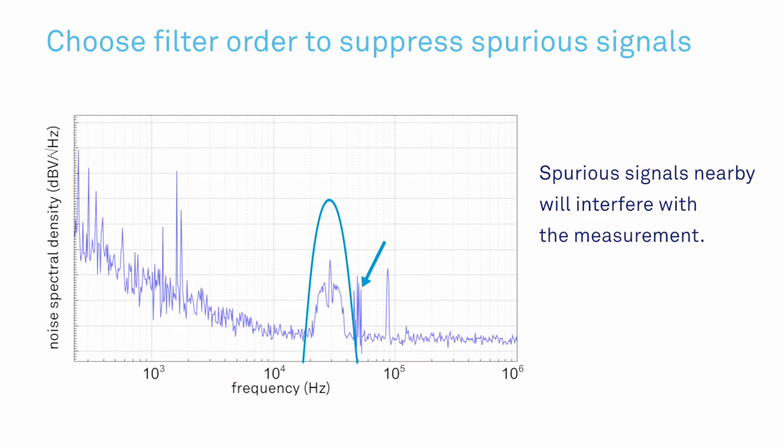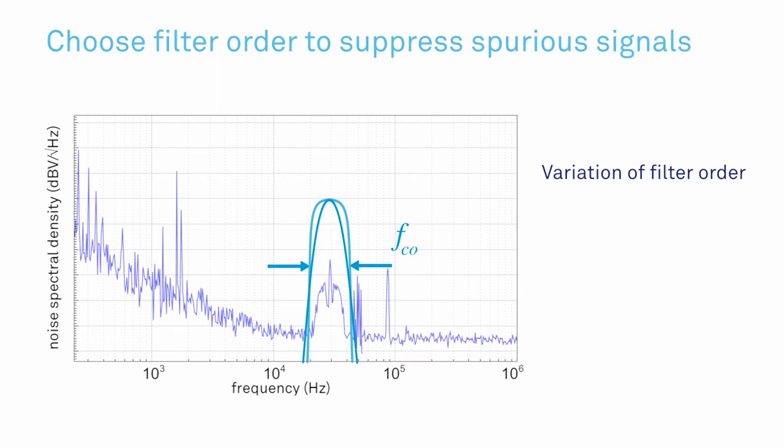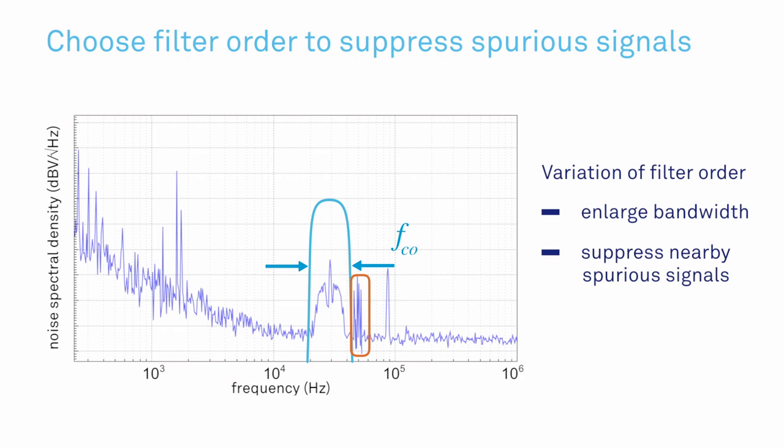In case there are spurious signals nearby, they will interfere with your measurement. The filter order adds a degree of freedom to the settings. With a higher order, a broader bandwidth can be selected while keeping the unwanted frequency suppressed.